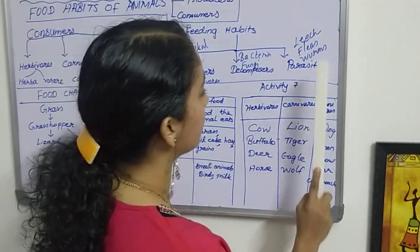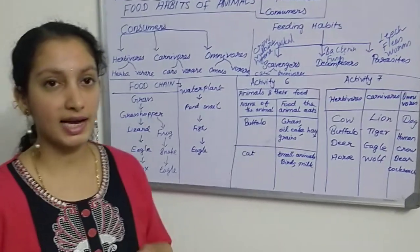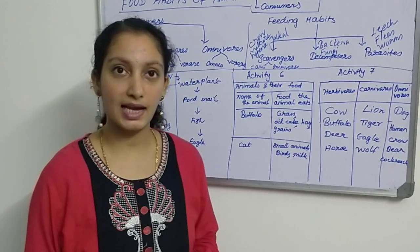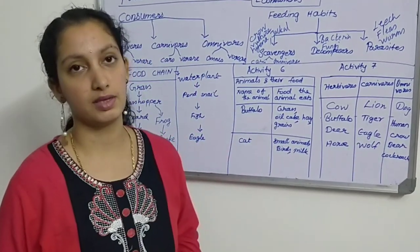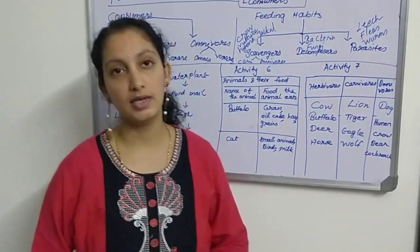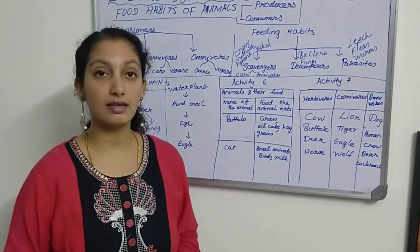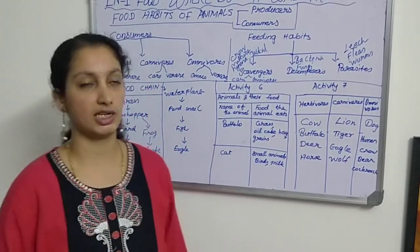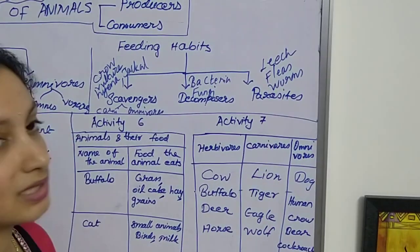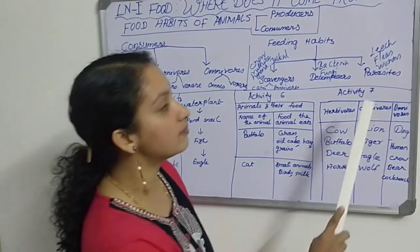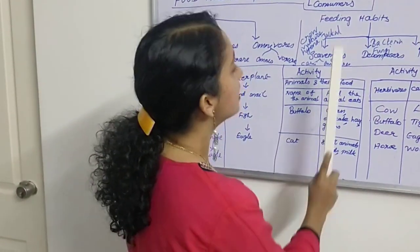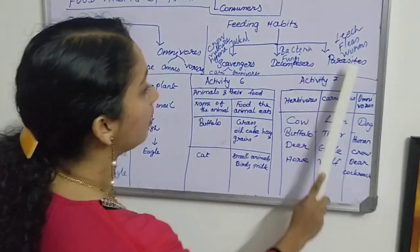The third group is parasites. A parasite is an organism which lives inside another organism and derives nutrition from that organism. The organism where the parasite lives is called the host. Examples of parasites are leeches, fleas, and worms like hookworm and tapeworm. So these are the three groups under feeding habits: scavengers, decomposers, and parasites.